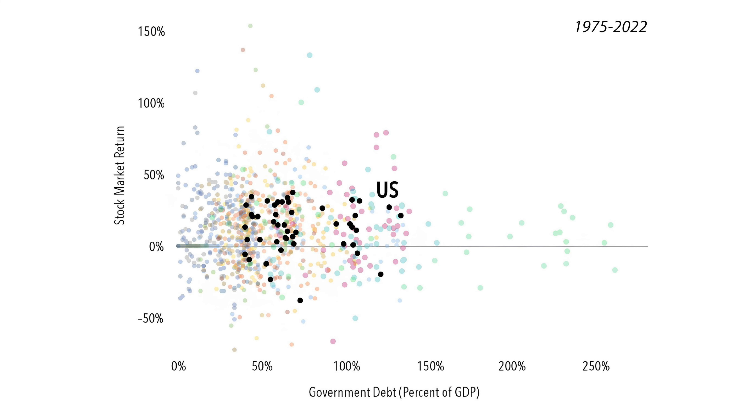What we actually see is that's not the case. These dots are random — there is no downward sloping line. What that means for us as investors is that the level of debt does not necessarily imply that countries' markets are going to be positive or negative.